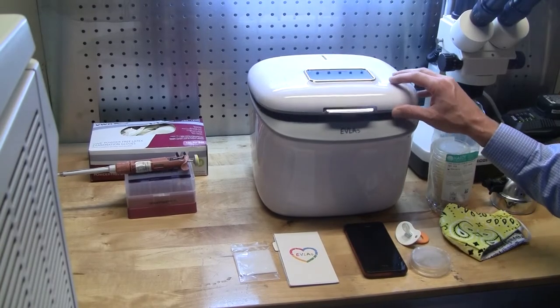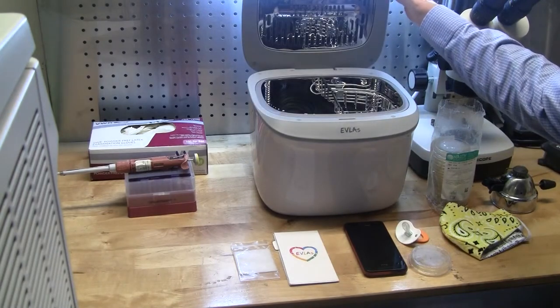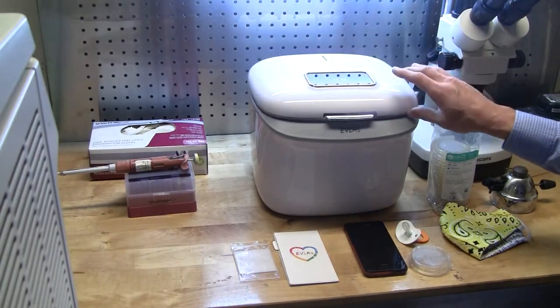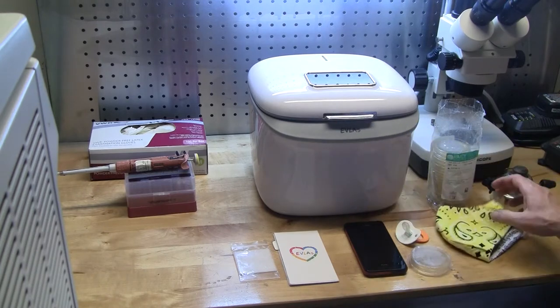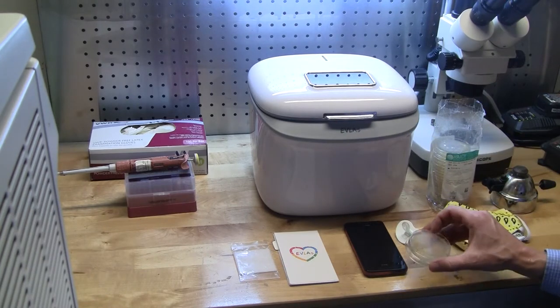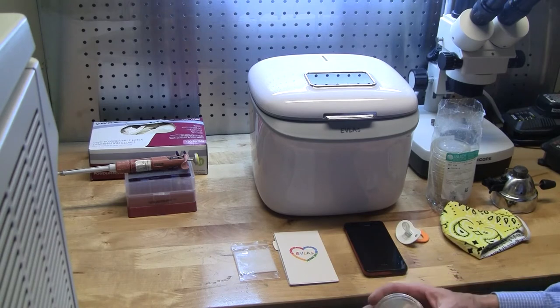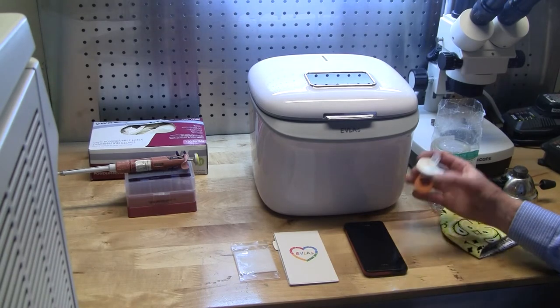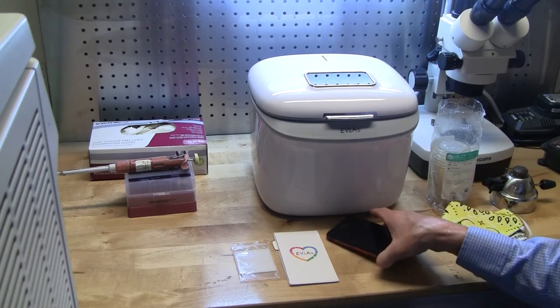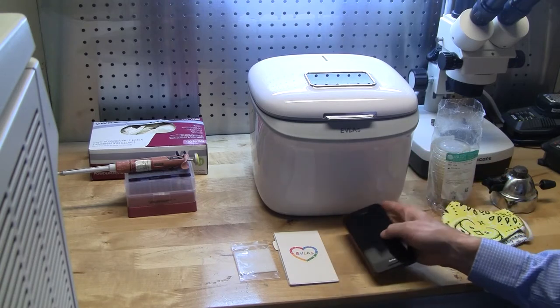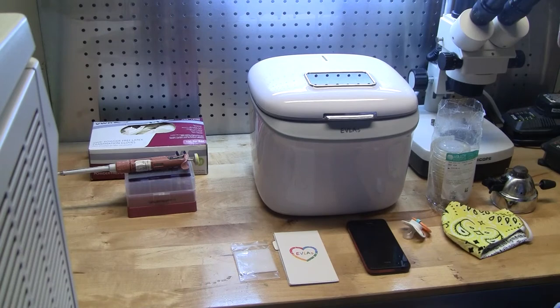This is the Evlas UV sterilizer. Very simple operation and we're going to be sterilizing a few items like a mask - a lot of people are wearing those during the current pandemic and should be. We've got a pacifier from my one-year-old that's been used and a cell phone that's been handled. There'll be bacteria and germs and viruses on that.